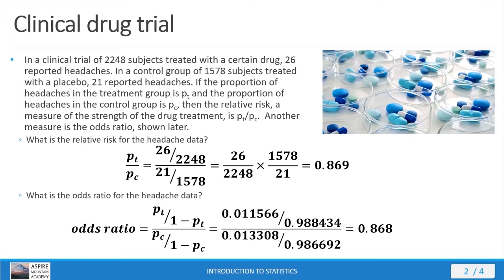This proportion, P sub T — taking 26 divided by 2248 — gives us 0.011566. One minus that, so 1 minus 0.011566, is 0.988434. We do the same thing with the control group: 21 over 1578 gives 0.013308, and subtracting from one gives 0.986692. When you divide all this out — I just punched this out on my calculator — I get 0.868. There's the odds ratio.